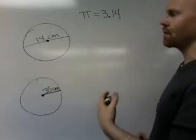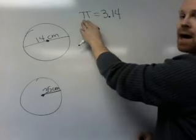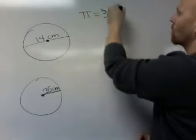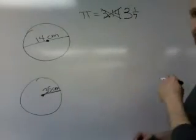Alright, for this video I'm going to show you how to find the circumference of a circle, only instead of using pi as 3.14, we're going to use pi as the fraction 3 and 1/7.